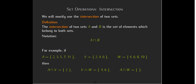What about V and W? They have 4 and 6 in common, but A and W have no elements in common. So their intersection is the empty set.